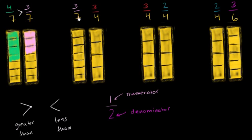Now what about 3 sevenths and 3 fourths? Here we have different denominators but the same numerator. I encourage you to pause this video, draw some boxes, and try to judge for yourself which is a larger fraction. Let's color them in — 3 sevenths first. I've colored in three of the seven equal groups.